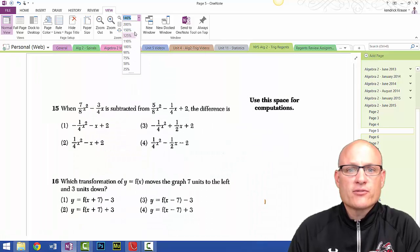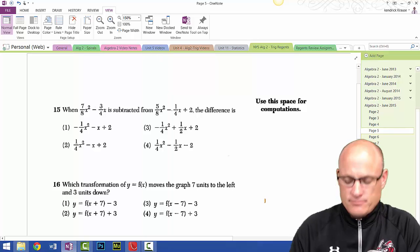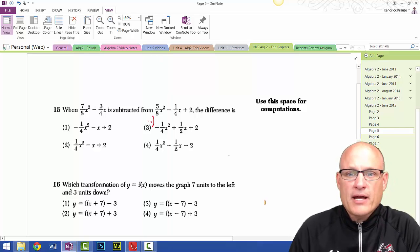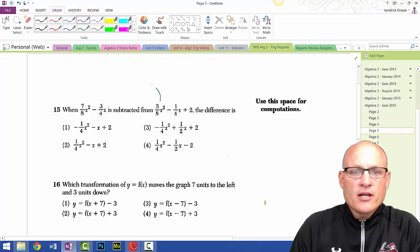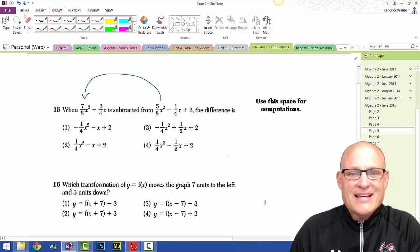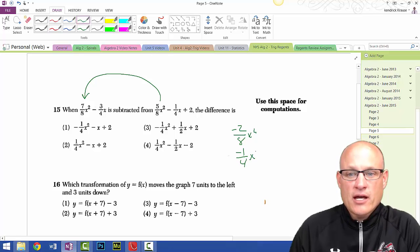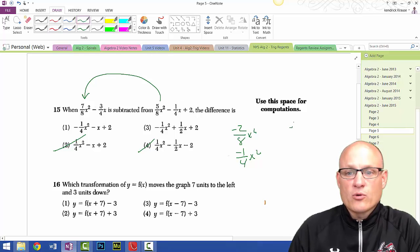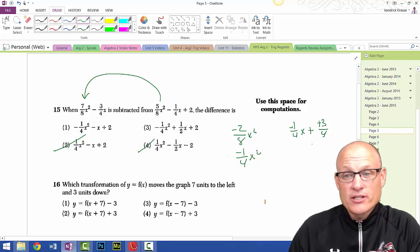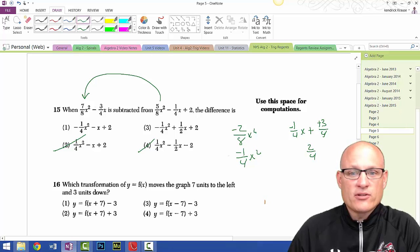Question 15: Subtracted from means we got to work backwards. So we're going to take 5/8 and subtract 7/8. 5/8 minus 7/8 is negative 2/8 x squared, which is really negative 1/4 x squared. Then we're going to take negative 1/4 x and subtract off negative 3/4. Well that's really the same as adding 3/4, so this is negative 1 plus 3, so that's 2/4 which is 1/2, positive 1/2 x squared.